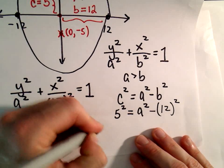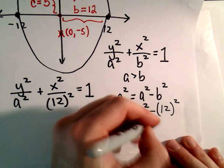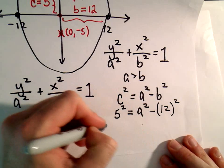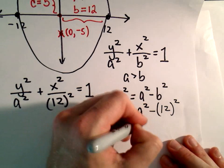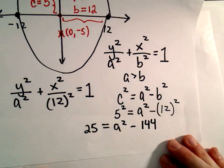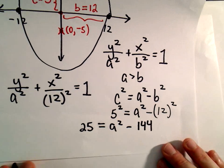That's going to be 25. Let's go ahead and write it all out. So this is going to be 12² which is 144, so we have 25 = a² - 144.